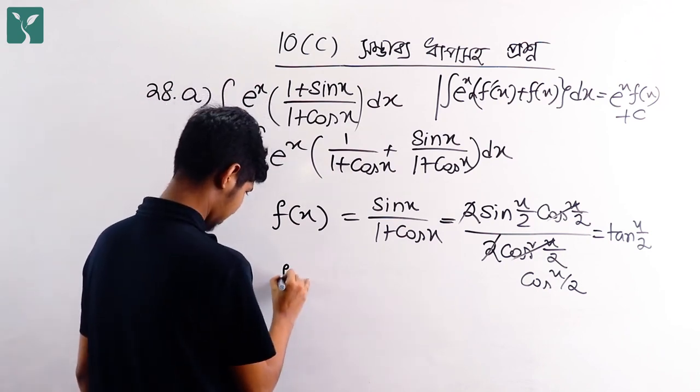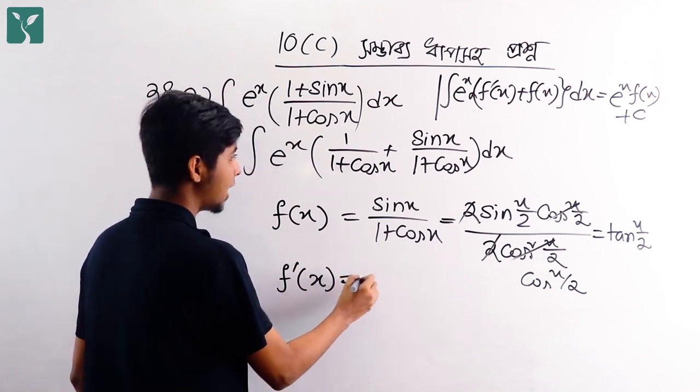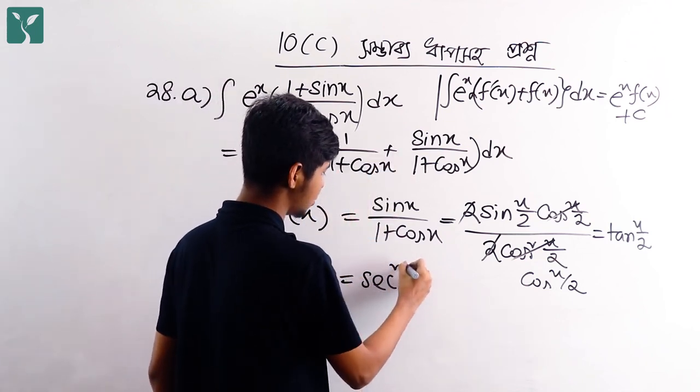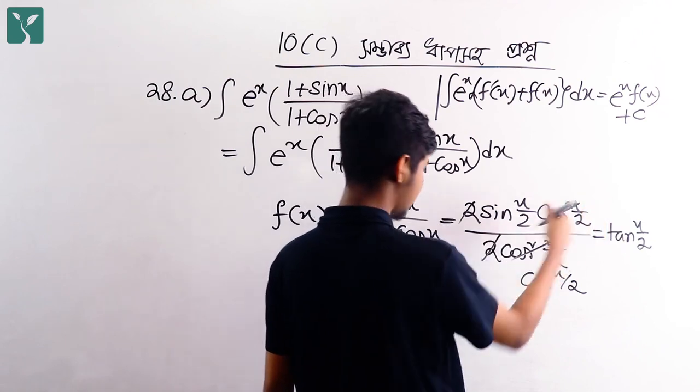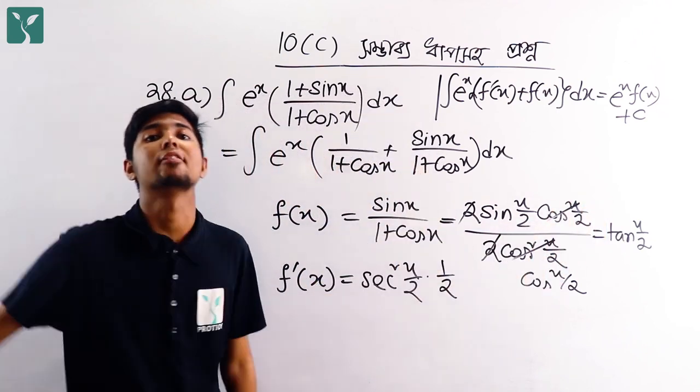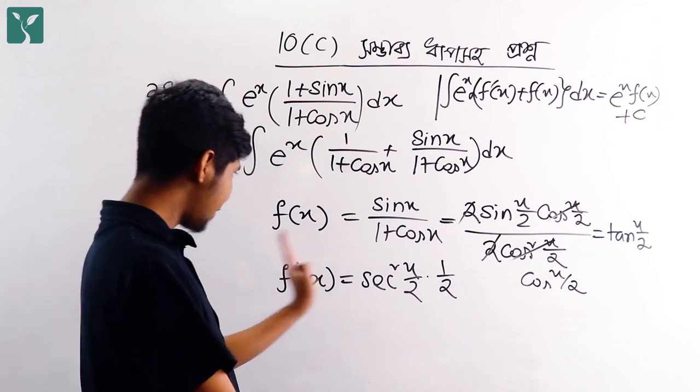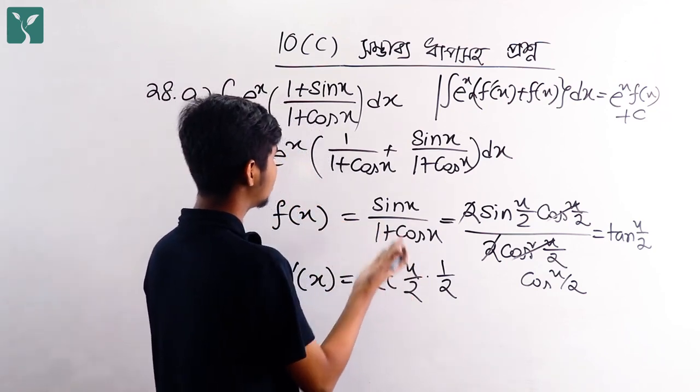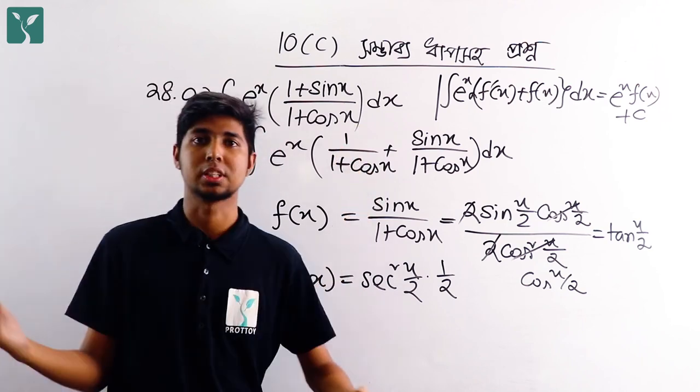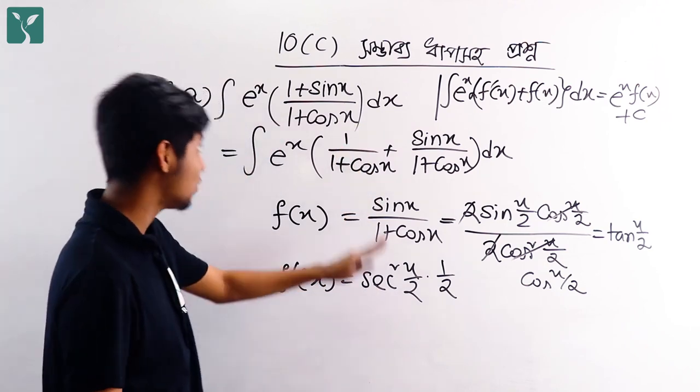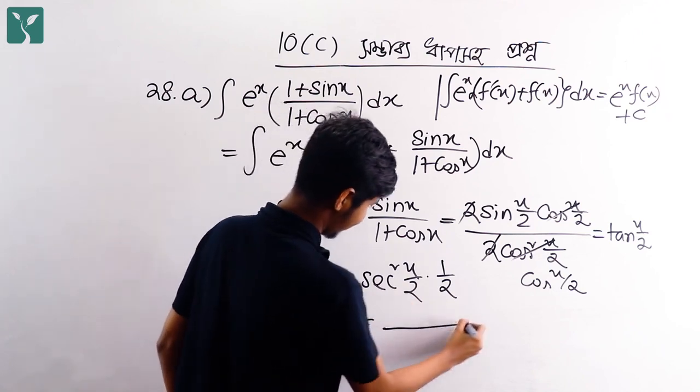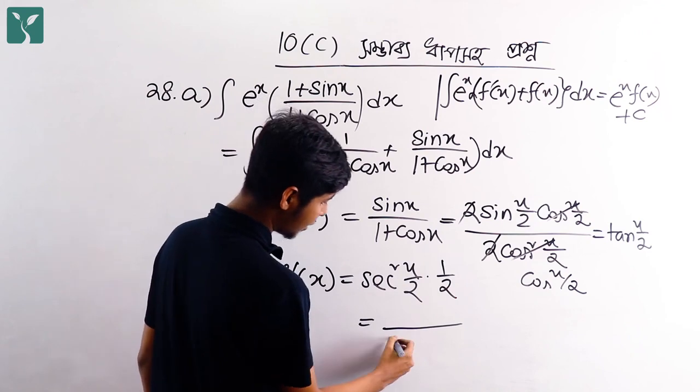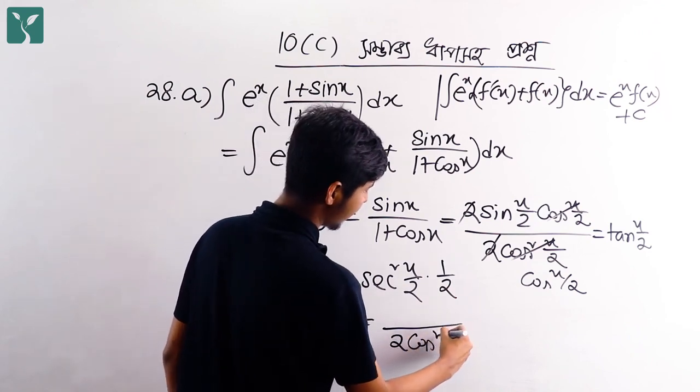f prime of x will be what? When we differentiate tan, we get sec square x by 2. So f prime of x is sec square x by 2. But this is one by one plus cos x. What is sec? Sec means one by cos, so sec square x by 2 equals one by cos square x by 2.